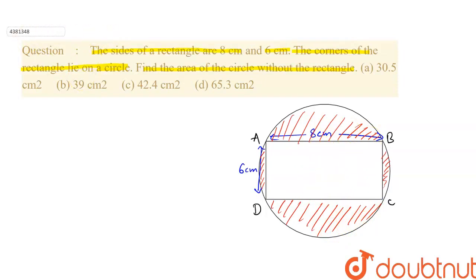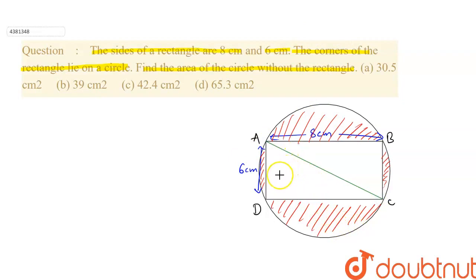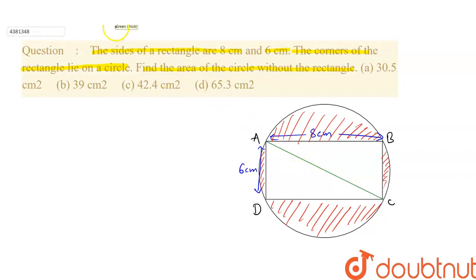How can we find the circle area? We have the rectangle inscribed in the circle. If we talk about the diagonals — let's say diagonal AC — when a rectangle is inscribed in a circle, then the rectangle's diagonal is the diameter of the circle. So we can find the diameter of this circle.